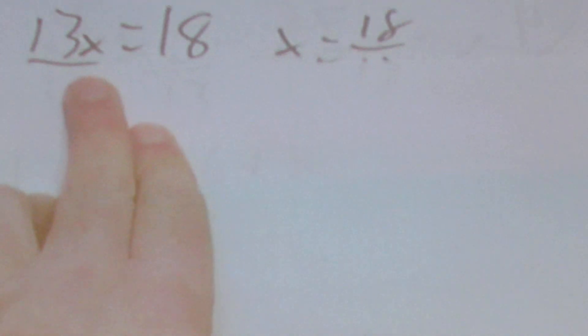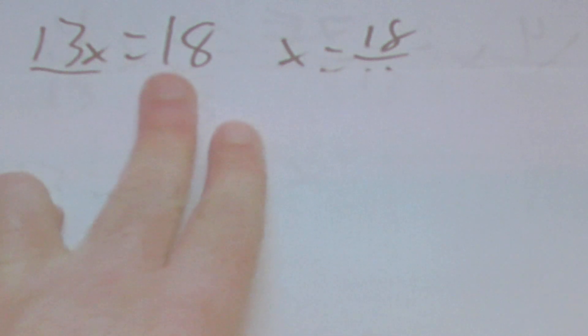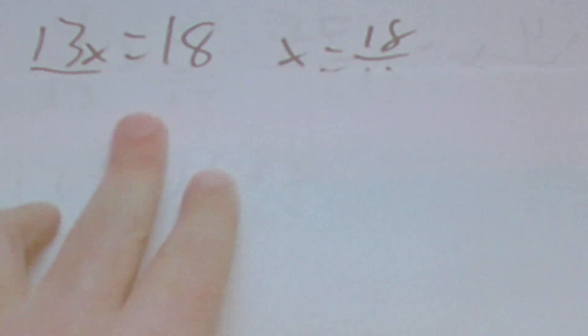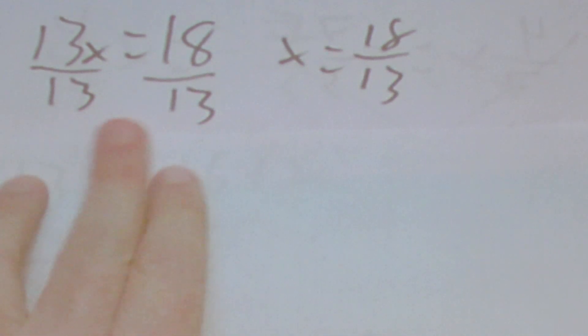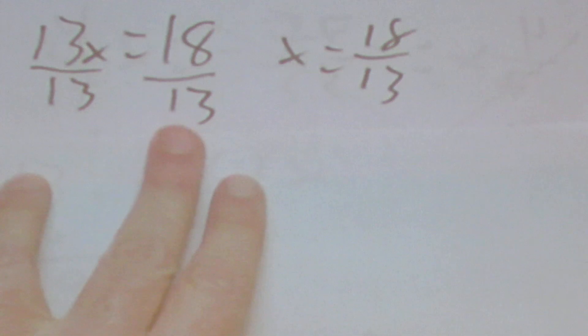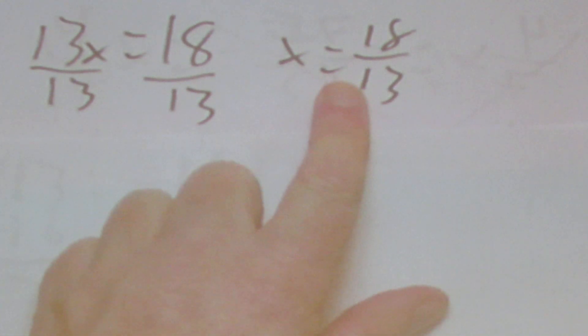Next we'll have some equations. Starting with 13x = 18 — divide both sides by 13 and you just get x = 18/13. Leave it as a fraction; don't change it to a decimal.